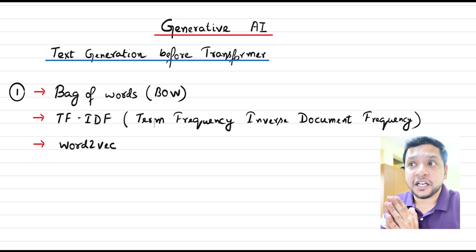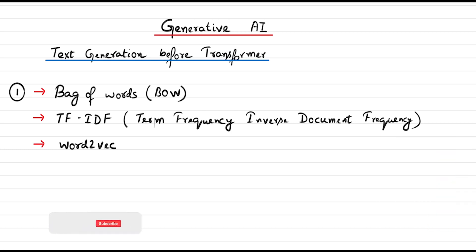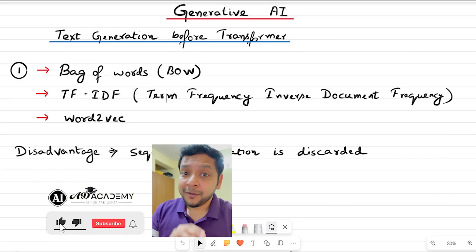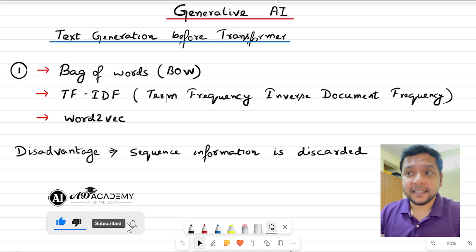In earlier days of text generation before transformers, we used bag of words, TF-IDF, and word2vec-like techniques to generate different kinds of text predictions. One of the main disadvantages of these techniques is that the sequence information is discarded.